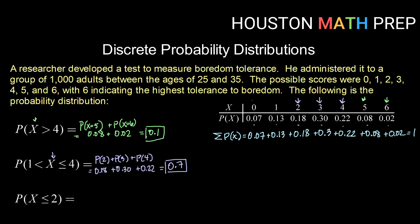So less than or equal to 2 are all values less than 2 and also including 2. So that would be the probability of 0 plus the probability of 1 plus the probability of 2. That would be 0.07 plus 0.13 plus 0.18. Adding those up, I get 0.38.